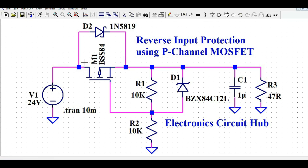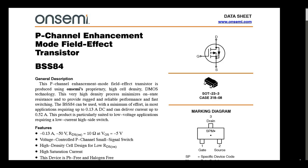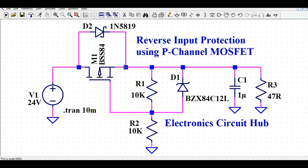When the battery is connected with the correct polarity, the body diode of the MOSFET conducts from drain to source, so 24 volts reaches the source of M1. The resistor divider gives 12 volts across R1 and 12 volts across R2, making the source-to-gate voltage negative — minus 12 volts — which turns on the P-channel MOSFET, providing the lowest impedance path to the load.